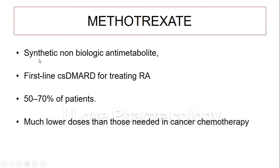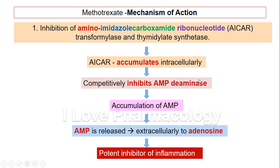Methotrexate is a first-line disease-modifying anti-rheumatoid drug for treating rheumatoid arthritis. It is specifically a first-line drug for treating moderate to severe rheumatoid arthritis. It responds well in 50 to 70 percent of patients, and the dose required to treat rheumatoid arthritis is much lower compared to the dose needed in cancer chemotherapy.